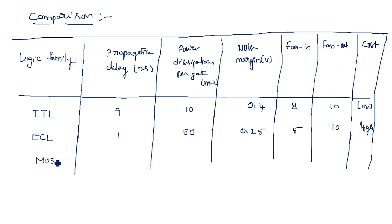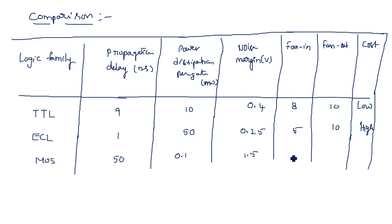The MOS logic family has a propagation delay of 50 nanoseconds, power dissipation of 0.1 milliwatts, noise margin of 1.5 volts. There is no fan-in specified, fan-out is 10, and the cost is low.